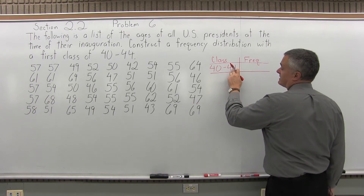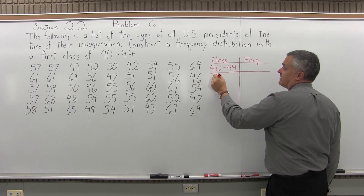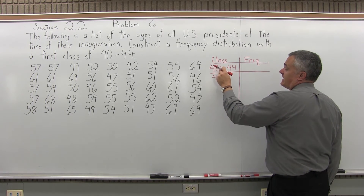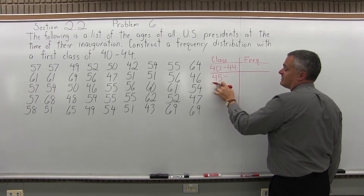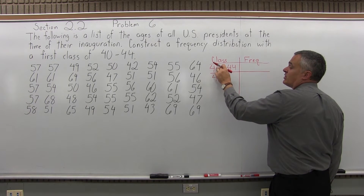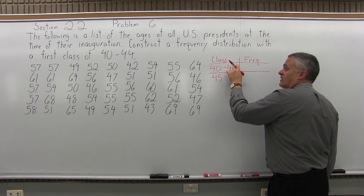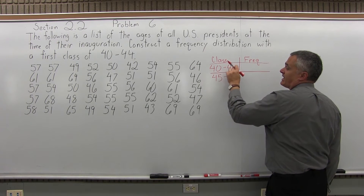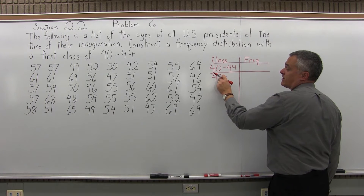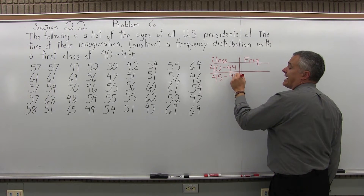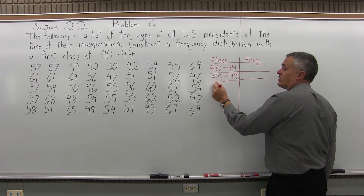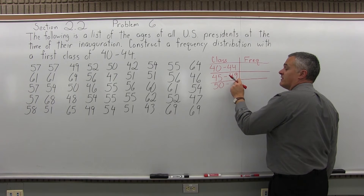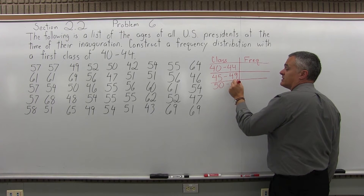If the first class ends at 44, the next one would have to start at 45. You can't begin a class and end the next one at the same value. To go from the lower limit to the upper limit, I'm adding 4. So 45 plus 4 is 49. Then if the second class ends at 49, the third one must begin at 50, and 50 plus 4 gives the upper class limit of 54.